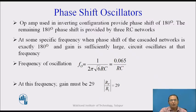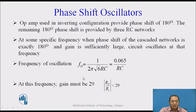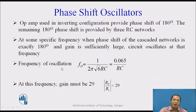The op-amp in inverting configuration provides a phase shift of 180 degrees, and the remaining 180 degrees is produced by the three RC network. Hence the total phase shift around the loop is 360 degrees. At some specific frequency, when the phase shift of the cascaded RC network is exactly 180 degrees — noting that the inverting amplifier's phase shift is fixed at 180 degrees — by properly selecting values of R and C, the RC network offers a phase shift of 180 degrees at a certain frequency. At this particular frequency, if the gain of the amplifier is sufficiently large, the circuit starts oscillating.